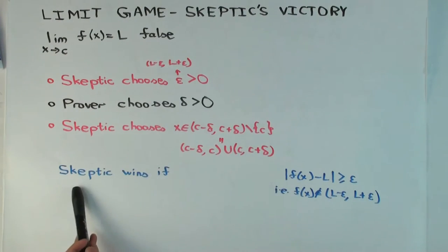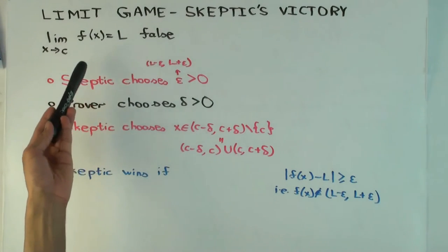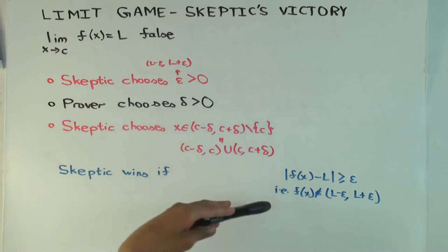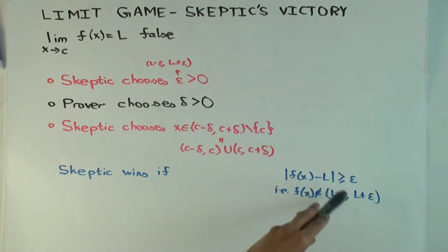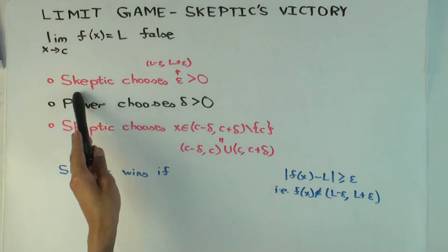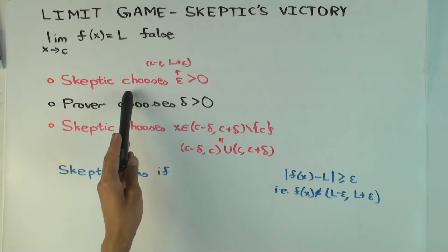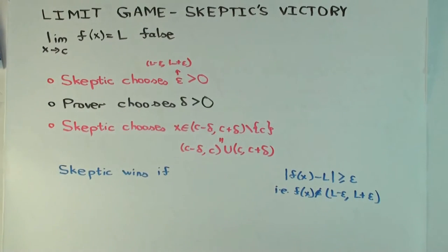But now we want to figure out when the skeptic wins. So the skeptic wins if it's greater than or equal to epsilon. That means f(x) is not in the epsilon neighborhood of L. This video assumes you already seen the previous videos where we gave these definitions. And so I'm reviewing it quickly, but not explaining it in full detail. So the skeptic wins if f(x) is outside the center. That means the prover failed to rise to the skeptic's challenge of trapping the function.